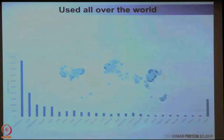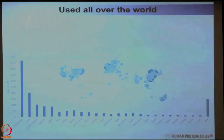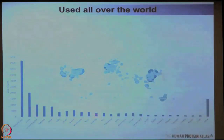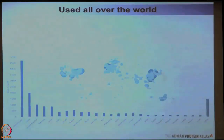The atlas is used all over the world. The United States dominates, highly, followed by China, UK, and Germany. India is also up there alongside Sweden, Canada, and some other countries when it comes to using the Human Protein Atlas.